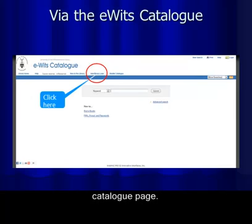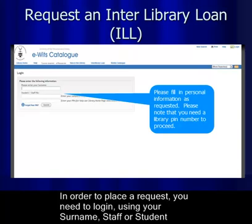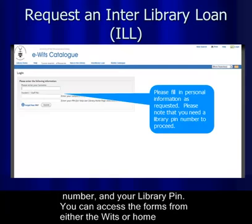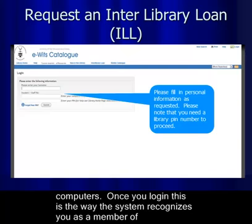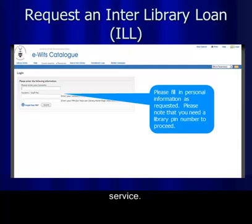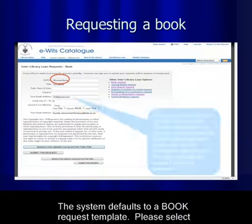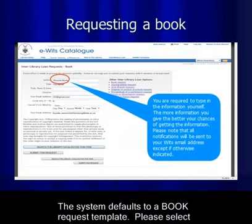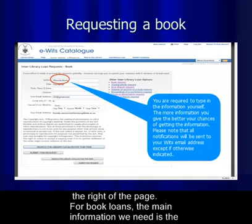Look out for the link to the online interlibrary loan. In order to place the request, you need to log in using your surname, staff or student number, and your library PIN. You can access the forms from either the VETS or home computers. Once you log in, the system recognizes you as a member of the VETS community and as someone entitled to use the interlibrary loan service.